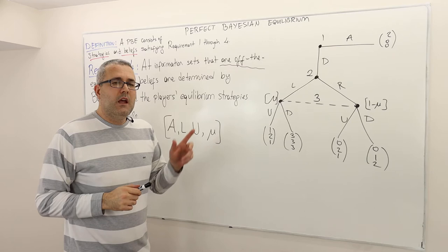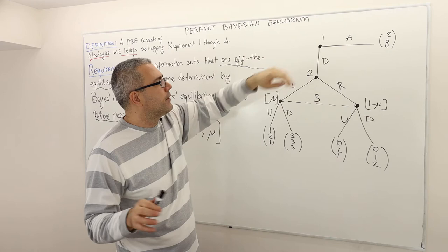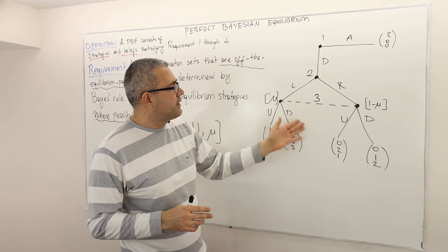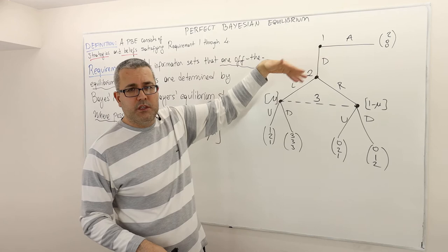Now let's consider a second example. This game is different — there are three players. Player one chooses between A and D. If he chooses A, the game is over. If he chooses D, player two chooses between left and right. Then player three, who cannot observe player two's choice, chooses U or D. According to requirement one, we need a belief probability distribution on this information set. The other decision nodes are singletons, so they have probability one — meaning no distribution is needed there.